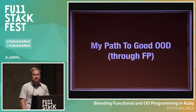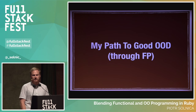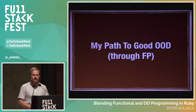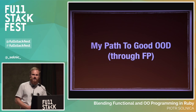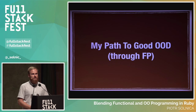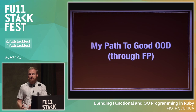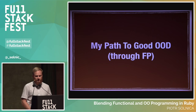My path to good object-oriented design leads through functional programming, and it was an accident. It's not like I learned functional programming and then decided to write Haskell or Elixir with Ruby syntax. I just started applying certain concepts to my code, and it turned out they were functional. Then I started learning about functional languages and realized it's the same thing.